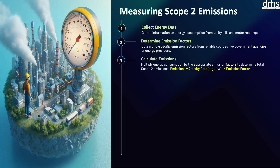The third step is to calculate emissions. After determining the emission factor, organizations can calculate their scope 2 emissions by multiplying the energy consumed by the corresponding emission factor. This calculation should be done for each type of energy purchased — electricity, steam, heating, and cooling — to obtain a comprehensive measure of scope 2 emissions. The results are typically expressed in metric tons of carbon dioxide equivalent, the standard unit for comparing emissions across different greenhouse gases. The Greenhouse Gas Protocol outlines the methodologies and the IPCC notes this approach provides reliable estimates when combined with appropriate emission factors.